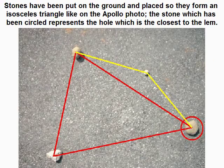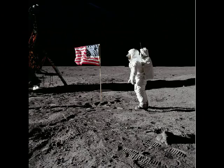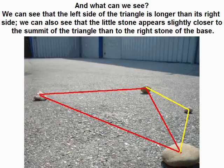Stones have been placed on the ground to form an isosceles triangle like on the LRO photo. The circled stone represents the hole which is closest to the LEM. A little stone has also been placed on the right side of the triangle at equal distance from the two stones of that side. The camera has then been lowered to take a more horizontal side view of the triangle of stones, placed on the left of the summit of the triangle. We can see that the left side of the triangle appears longer than its right side, and the little stone appears slightly closer to the summit than to the right stone of the base.